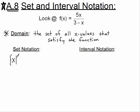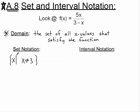The beginning of all set notations will always look like this for domain at least: the set of all x such that. Then we're going to describe what is in the domain or what is not in the domain right here, and then close the set. In this case, we know that x cannot be equal to 3, so I'm simply going to write x cannot be equal to 3, and then close my set with the brace. This is our set notation: the set of all x such that x is not equal to 3.